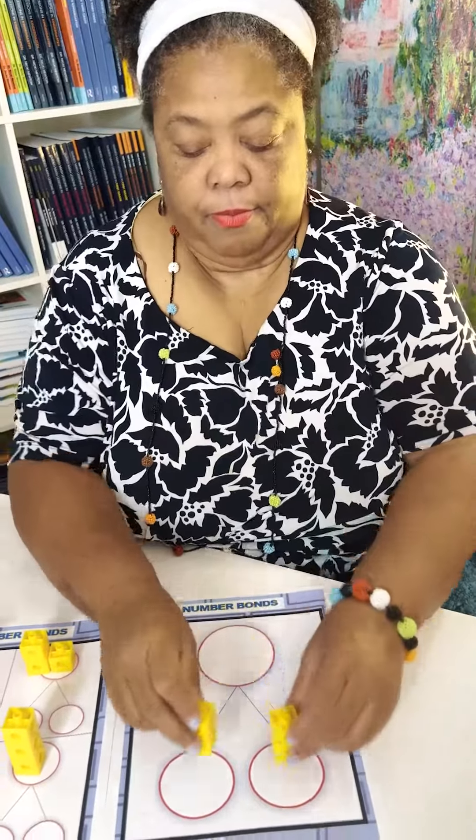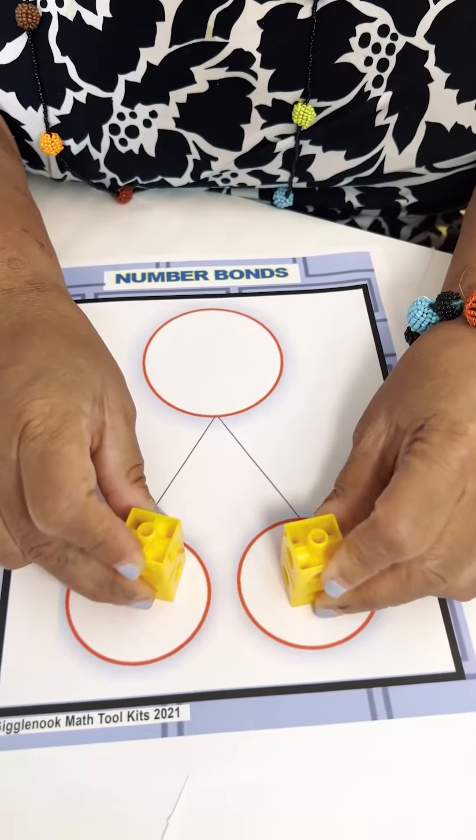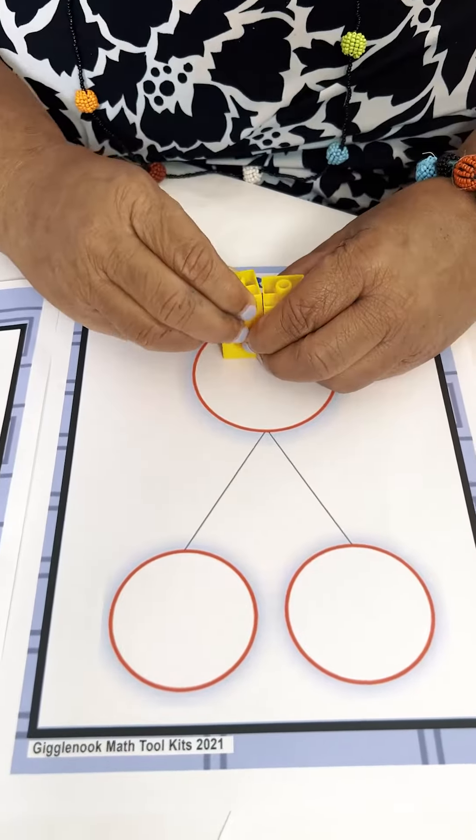You say, okay, we got four. Let's break it out. Two and two. We've decomposed it, we've broken it apart. We're going to put it back together. We have four.